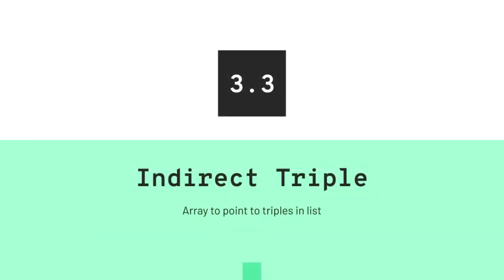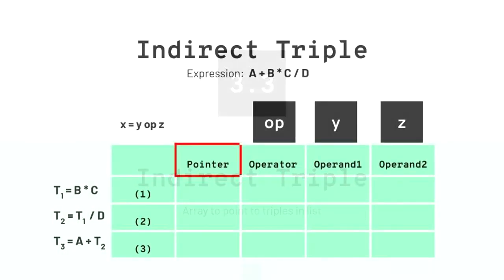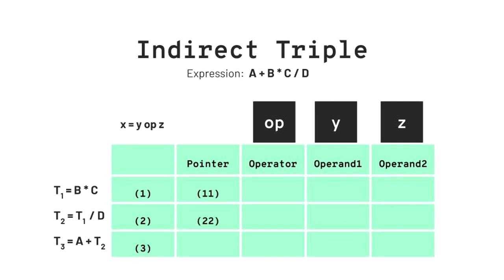The third and last method for three address code representation is indirect triple. This is the same as triple representation with the addition of a pointer field. In this field, we write pointers to the references, that is t1, t2, and t3. Let us assume the values of the pointers to be 11, 22, and 33.